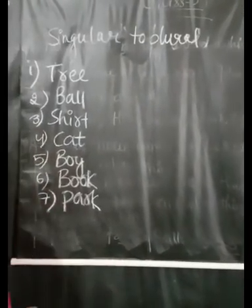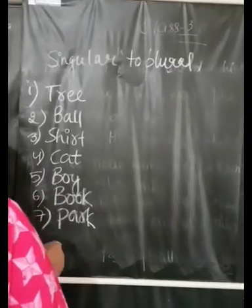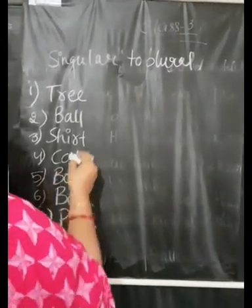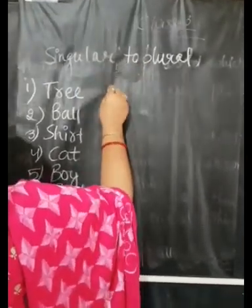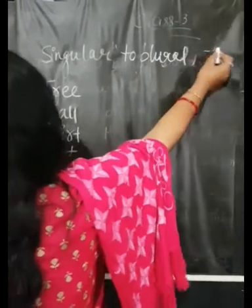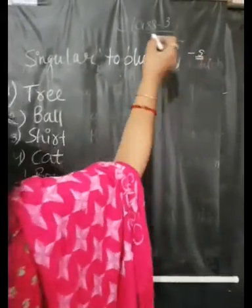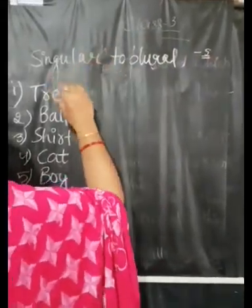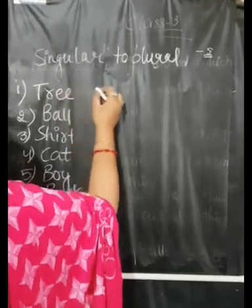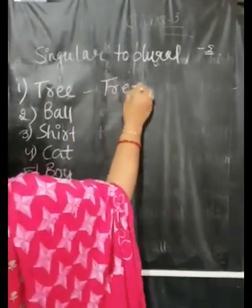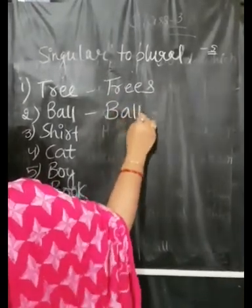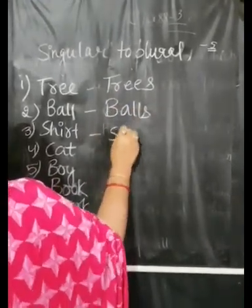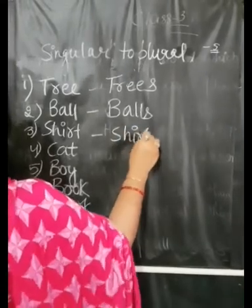Students, here are some rules in which the number of a noun may be changed from singular to plural. Usually, we add S to the singular form. For example: tree becomes trees, ball becomes balls, shirt becomes shirts.